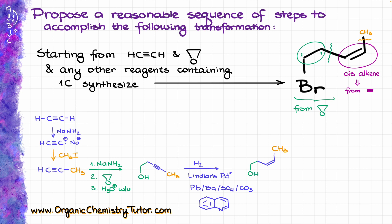Finally, in order to replace our OH with bromine, we can use a million different ways. Probably we want to use something softer — something that is not going to touch our double bond — so something like PBr3, which is going to give us the final product.